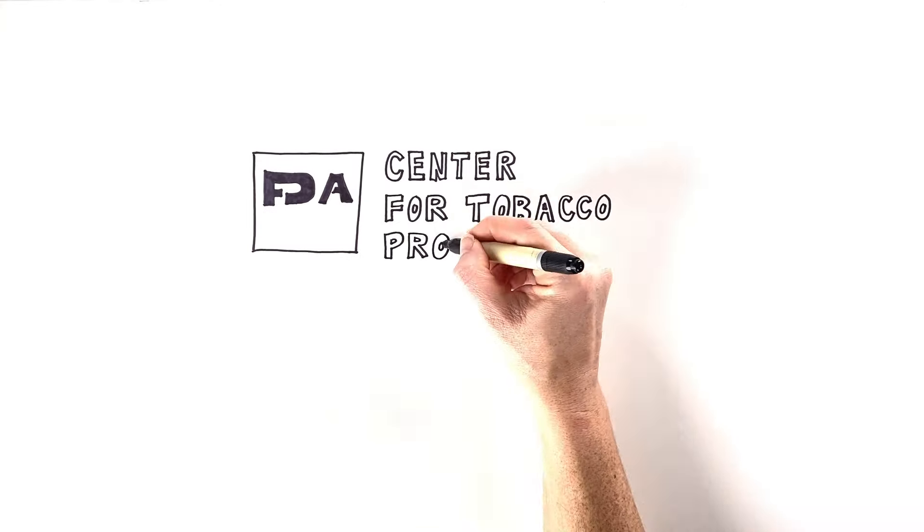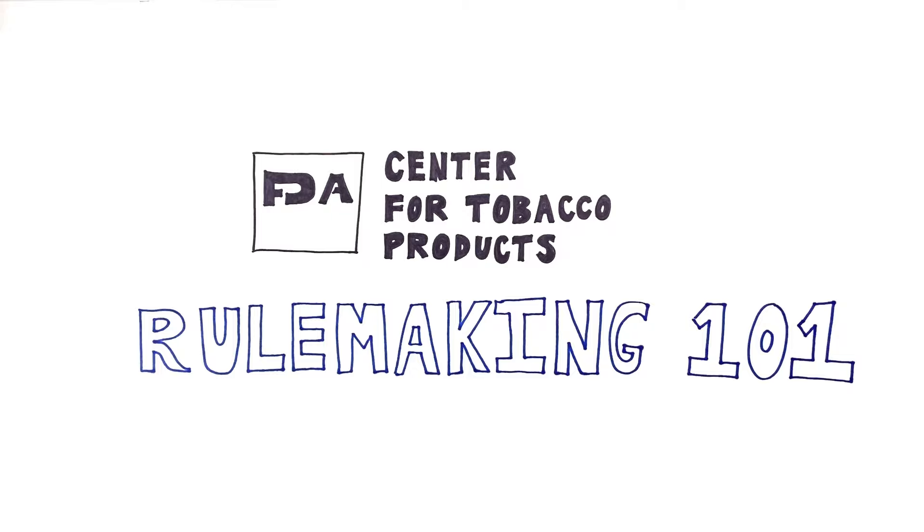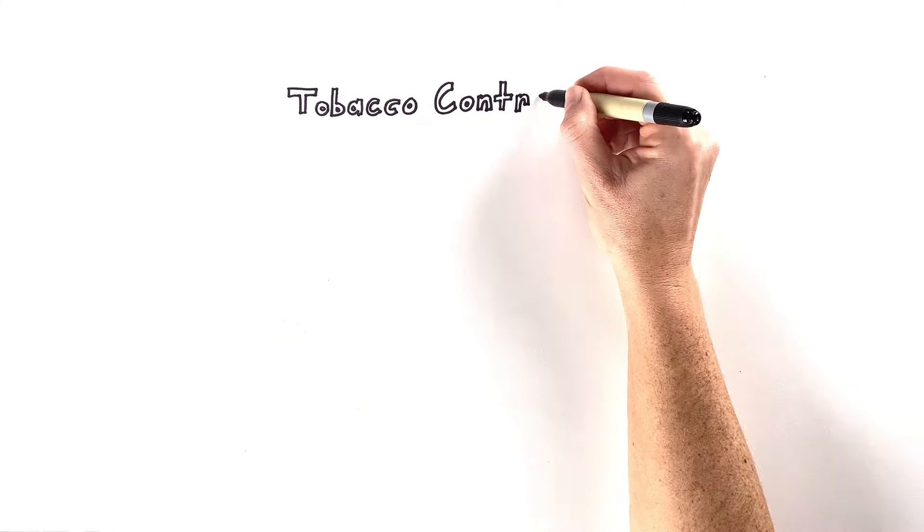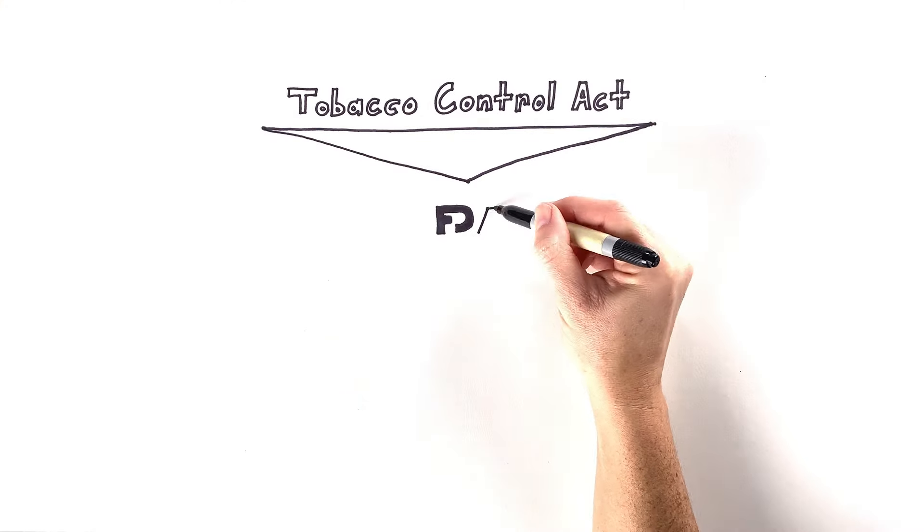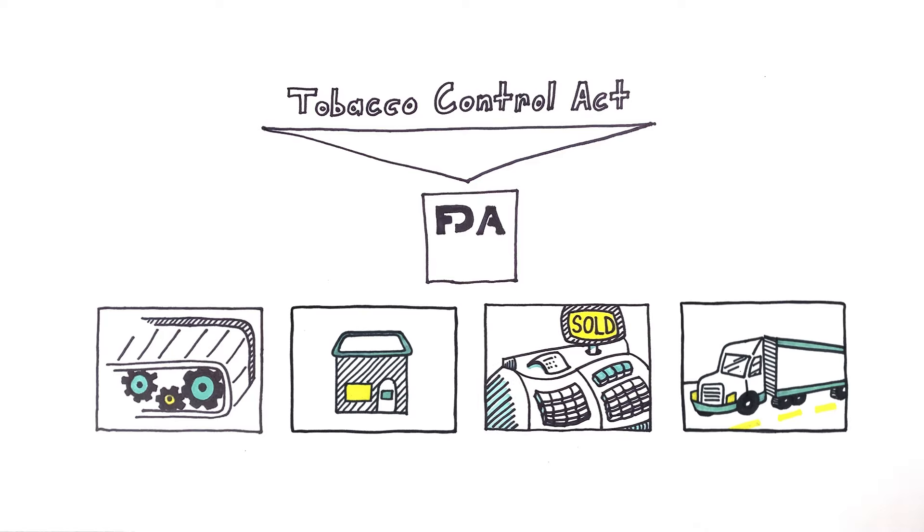FDA's Center for Tobacco Products, Rulemaking 101. The Tobacco Control Act is a law that gives FDA the authority to oversee how tobacco products are made, marketed, sold, and distributed in the United States.